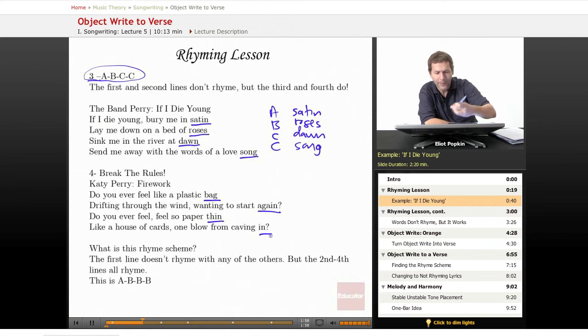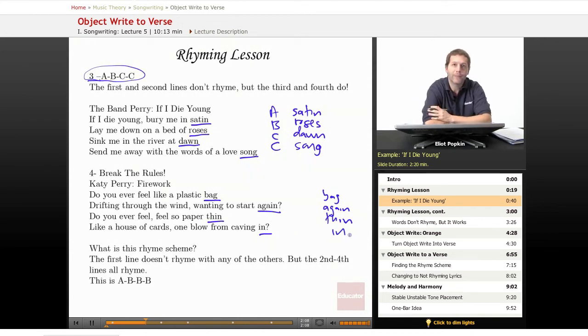Now, so we have bag, again, thin, and in. Any idea what the rhyme scheme is here? Obviously some of these rhyme. So this is actually ABBB.